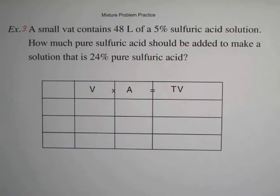Here's another mixture problem. A small vat contains 48 liters of a 5% sulfuric acid solution. How much pure sulfuric acid should be added to make a solution that is 24% pure sulfuric acid?